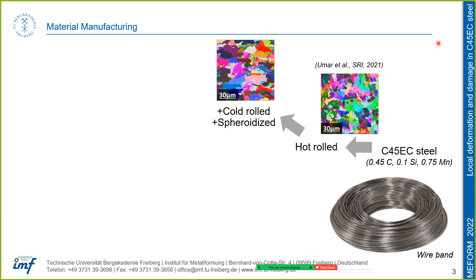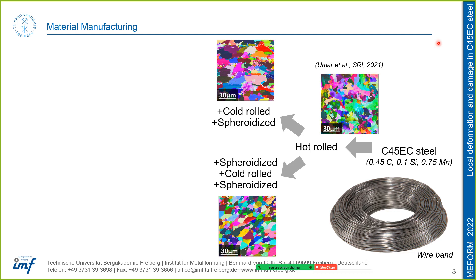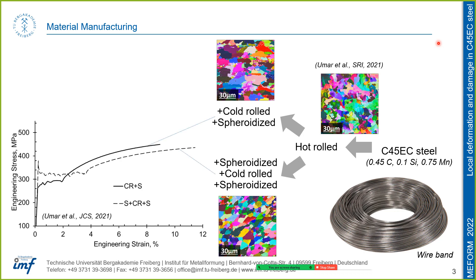For example, if we cold roll our material and then spheroidize it to break down the cementite particles into smaller particles, we get a certain microstructure. On the other hand, if we spheroidize first, then cold roll, and then spheroidize again, we get a different kind of microstructure. The material chemistry is the same, but based on the mechanical processing routes, we get different mechanical properties, different flow stresses, and different yielding behavior.